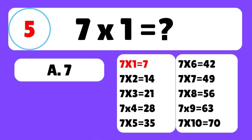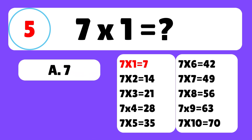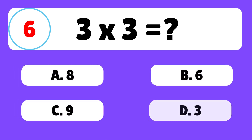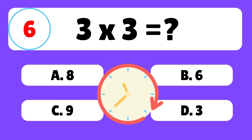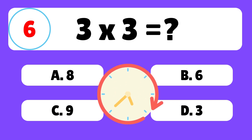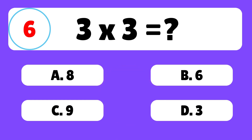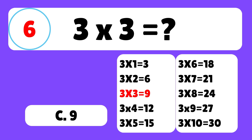Question 6. What is 3 times 3? The answer is C. 3 times 3 is equal to 9.